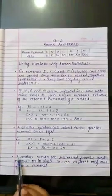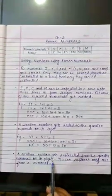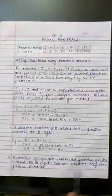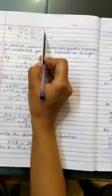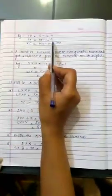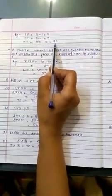Rule 4: a smaller number gets subtracted from the greater numeral on its right. You can subtract only once from a numeral. For example, IV equals 5 minus 1 equals to 4. IX equals 10 minus 1 equals to 9. XC equals 100 minus 10 equals to 90.